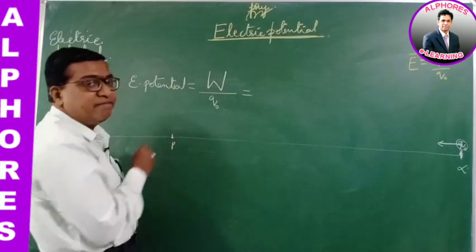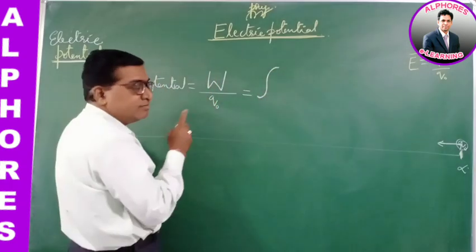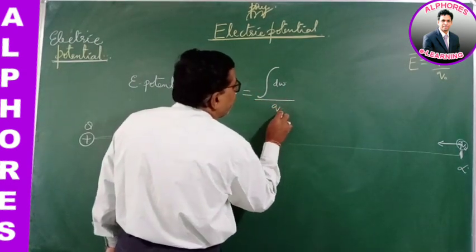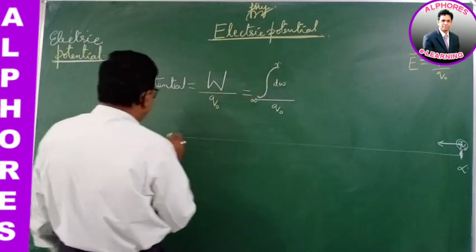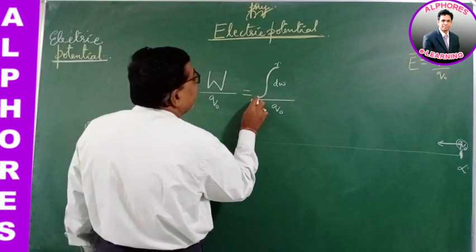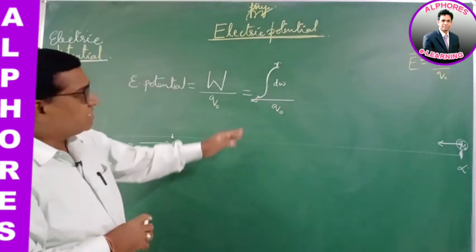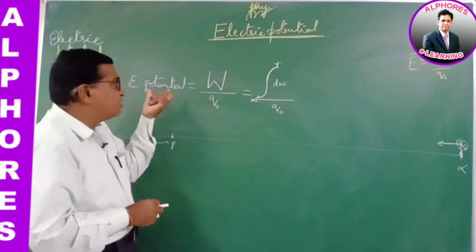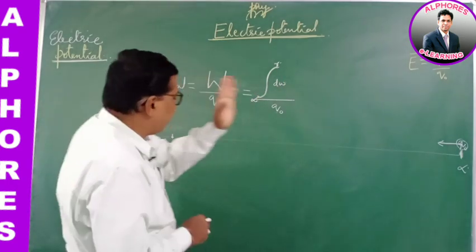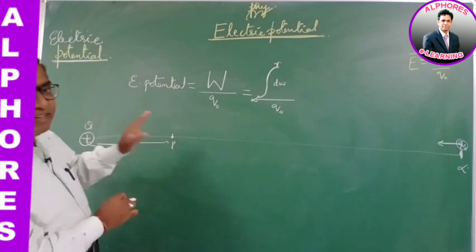It is the total work done — the summation, integration of dW — in moving a test charge q₀ from infinity to a distance r. It is the total work done in moving a unit positive test charge from infinity to a point in the field per unit test charge. This is defined as the electric potential — the electric potential of the charge system whose field is being considered.